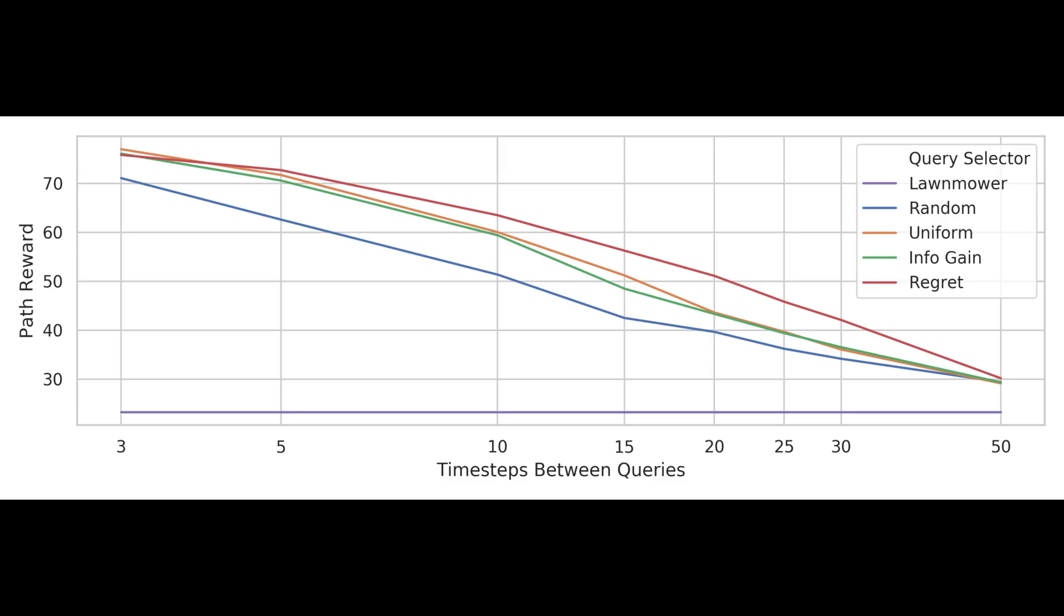We see that at most bandwidth levels, this novel regret heuristic helps the robot to collect more reward than any of the other approaches. This is because it combines the best parts of the information theoretic and uniform selection approaches, by asking questions for which the answer is both highly uncertain and relevant.